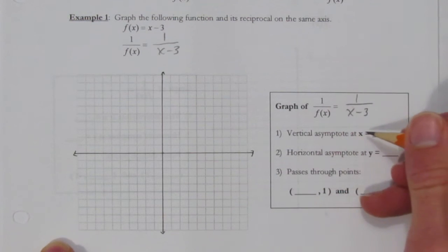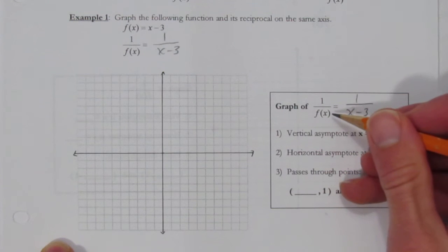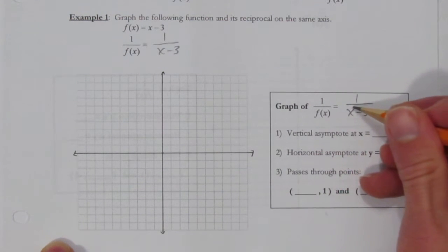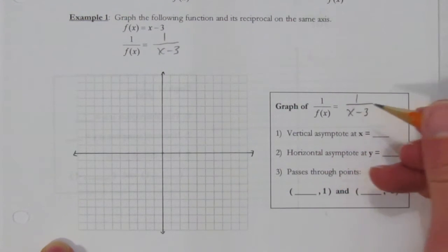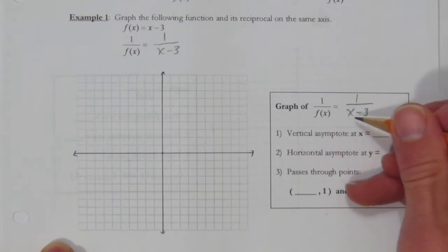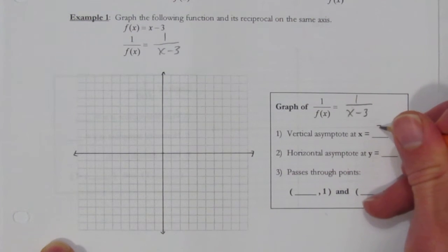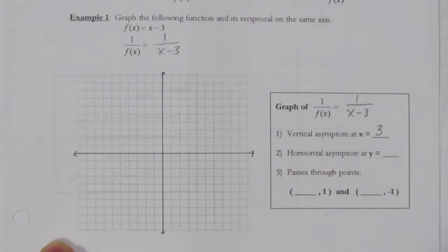First thing is vertical asymptote. This function, in fact any reciprocal function, has a vertical asymptote where the denominator would be 0. What would make this denominator 0? The answer is not 0 - if you substitute 0 in here, 0 minus 3 is negative 3. But if you substitute 3, the whole denominator would be 0. That's why the vertical asymptote is at x equals 3.